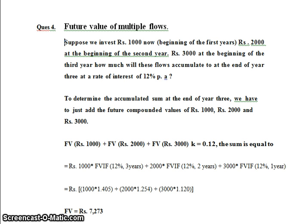The interest rate given in the problem is K equal to 0.12. So the sum is equal to Rs. 1000 into FVIF at 12% for 3 years, plus 2000 into FVIF at 12% for 2 years, plus 3000 into FVIF at 12% for 1 year. For this, we have to refer the future value table.